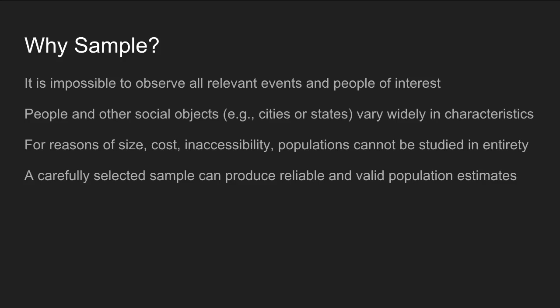Sampling is important for a few different reasons. First, it's impossible to observe all relevant events and people of interest. Populations are usually very large groups, and within those populations there's a lot of variability in characteristics. So it's usually not possible to study all relevant events and people. You have to select cases from the larger population, but the challenge is that there's a lot of variability between cases.